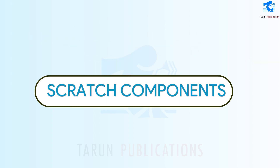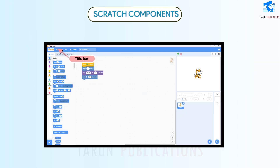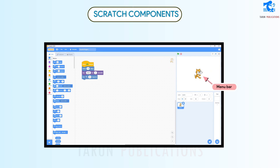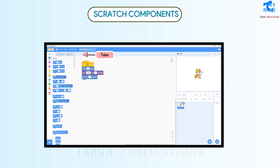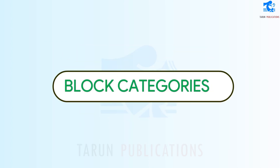Scratch Components include the Title Bar, Menu Bar, Stage Area, Sprite, Go Button, Stop Button, Sprite's Info Pane, Block Menu, Script, and Backdrop. There are also Tabs and Block Categories.